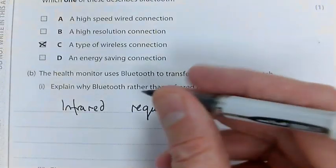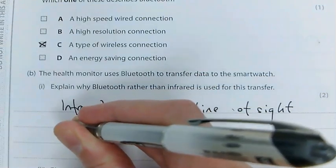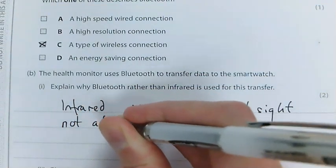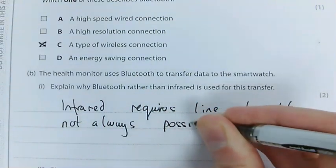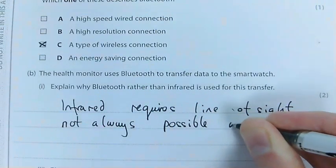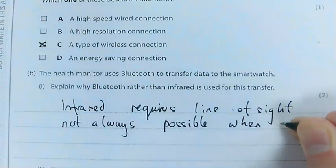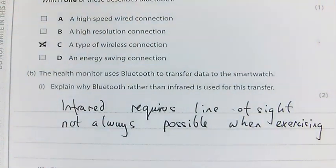Let's think about the health monitor. Not always possible when exercising - you're moving about a lot, not always going to be able to get line of sight. So to get two marks, which is what we want, we need to have that explanation there and it needs to talk about the health monitor.